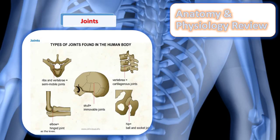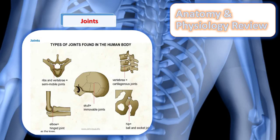A joint is a space in which two or more bones come together and articulate. The major function of a joint is to provide movement and flexibility in the human body. There are three types of joints. The first is synarthrodial — completely immovable joints such as the cranium. The second is amphiarthrodial — slightly movable joints such as those in the pelvic area. The third is diarthrodial or synovial — freely movable joints, which are listed on the screen here.